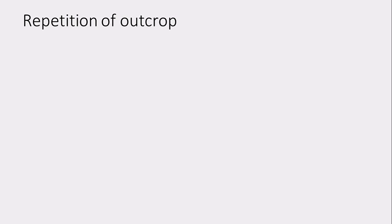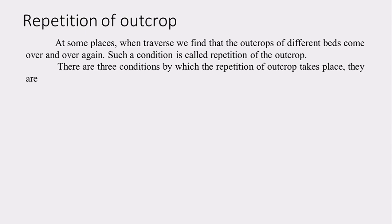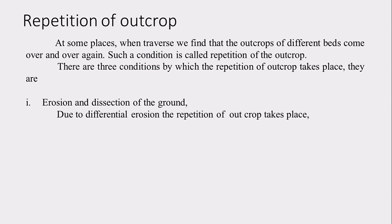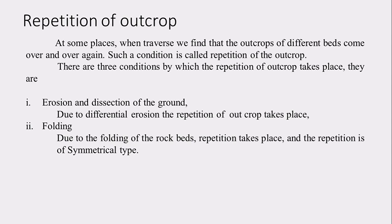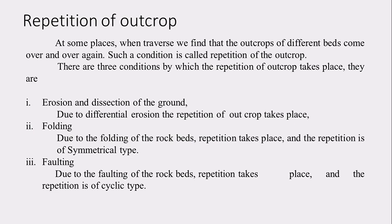The next heading is repetition of outcrop. When traversing, we find that some rock type may occur again and again — this is called repetition of outcrop. This repetition can be caused by three factors. The first is erosion and dissection of the ground. When rocks are horizontal or gently dipping, harder rocks remain while softer ones erode easily. Due to folding, repetition also takes place, but repetition due to folding is symmetrical. The third cause is faulting, which produces cyclic repetition.